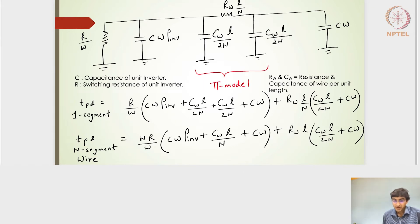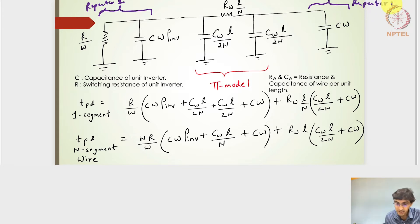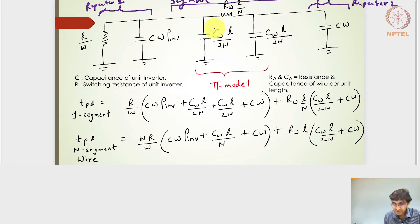For my overall segment of the wire with a repeater: one portion is for repeater number one, another portion is for the input capacitance seen from repeater number two, and in between is our segment of the wire. This segment has resistance rw·l/n, and capacitances cw·l/2n on both sides of the resistance, representing our pi model.